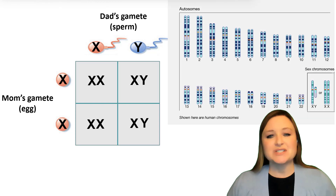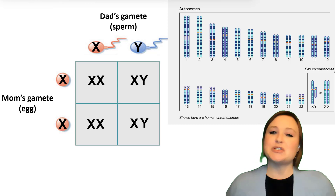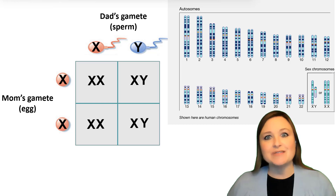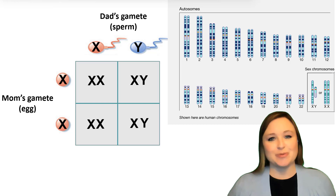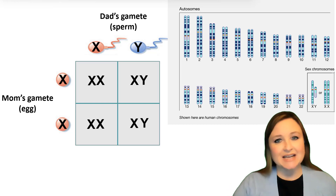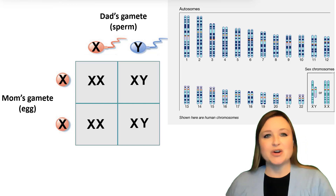Now we're focusing on the sex chromosomes — that 23rd pair. But remember, mom and dad are also going to be passing along chromosomes 1, 2, 3, 4, and so forth. So they're each passing along 22 other chromosomes as well as the X chromosome or the Y chromosome.